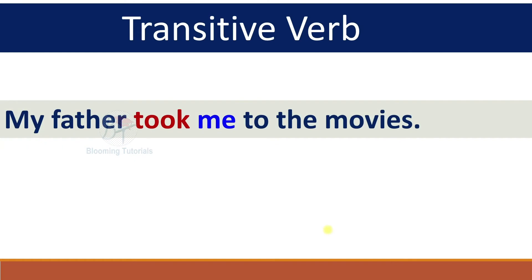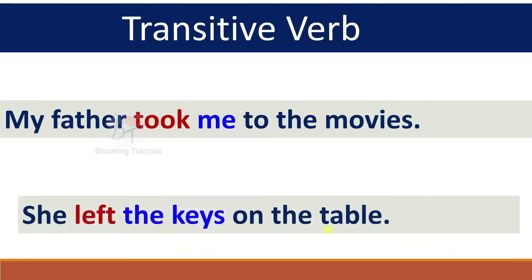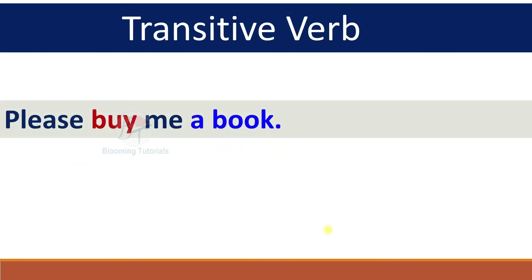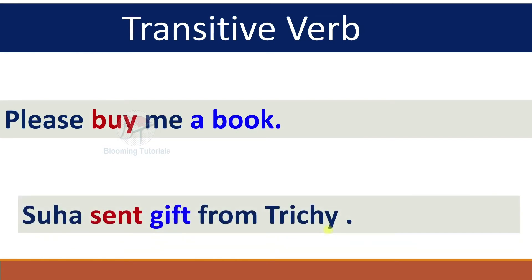'My father took me to the movies.' Here, 'took' is the main verb; 'me' is an indirect object and 'to the movies' is the direct object — this is a ditransitive verb. 'She left the keys on the table.' She left what? The keys — transitive verb. 'Please buy me a book.' Buy what? A book — transitive verb. 'Suha sent a gift from Trici.' Suha sent what? A gift — also a transitive verb.